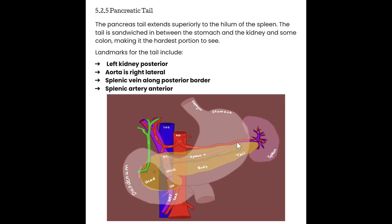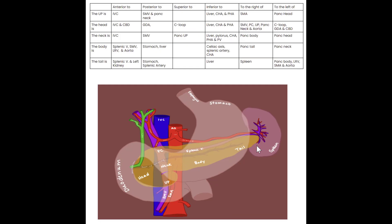The splenic artery also continues along the tail and into the spleen. When imaging the tail on ultrasound, you want to make sure to increase your depth a little bit. Even though it does angle more superiorly into the body, it also dives a little bit deeper. So especially when we are transverse on the pancreas, we want to include enough depth so we can see all of the tail.